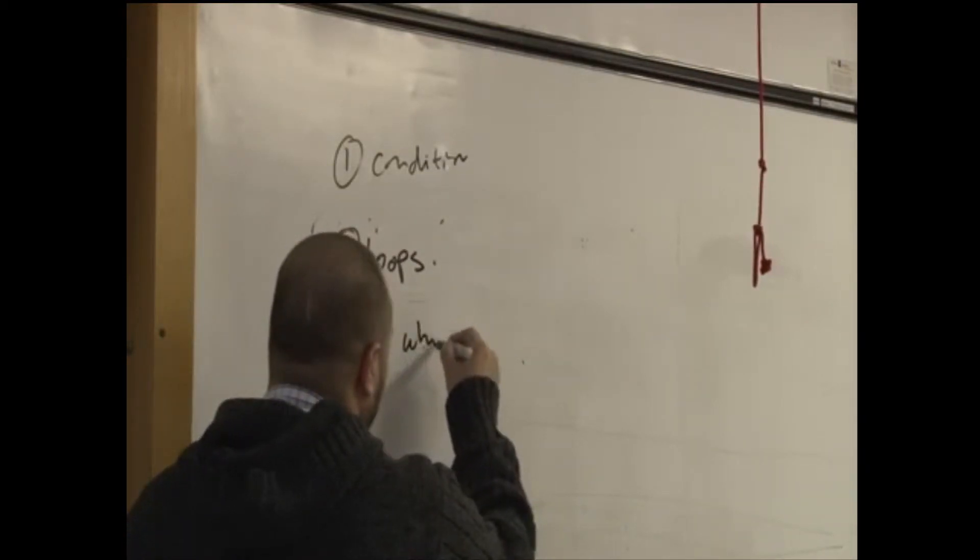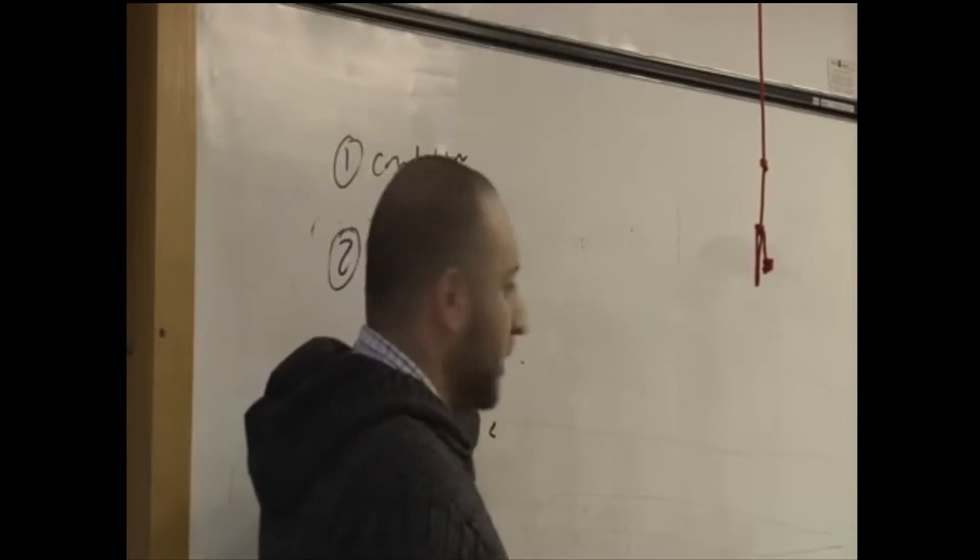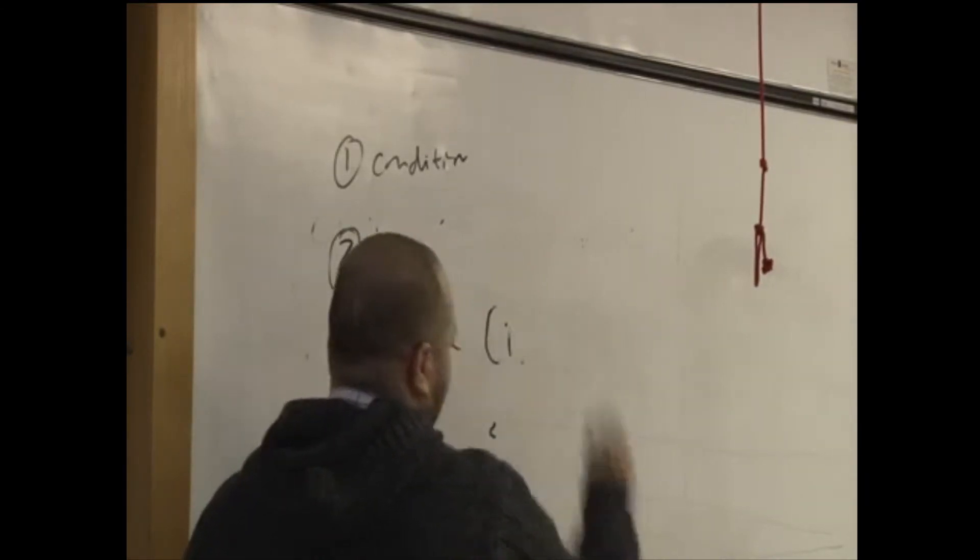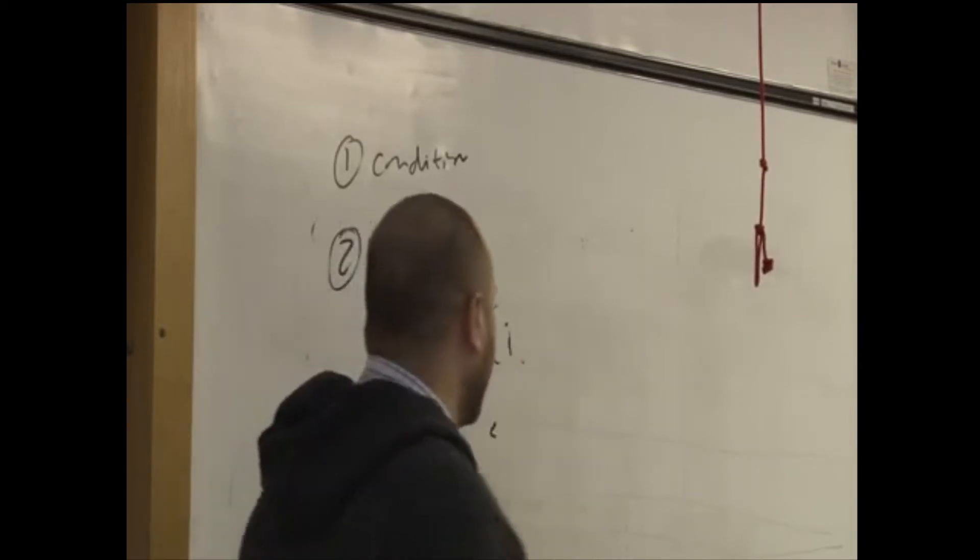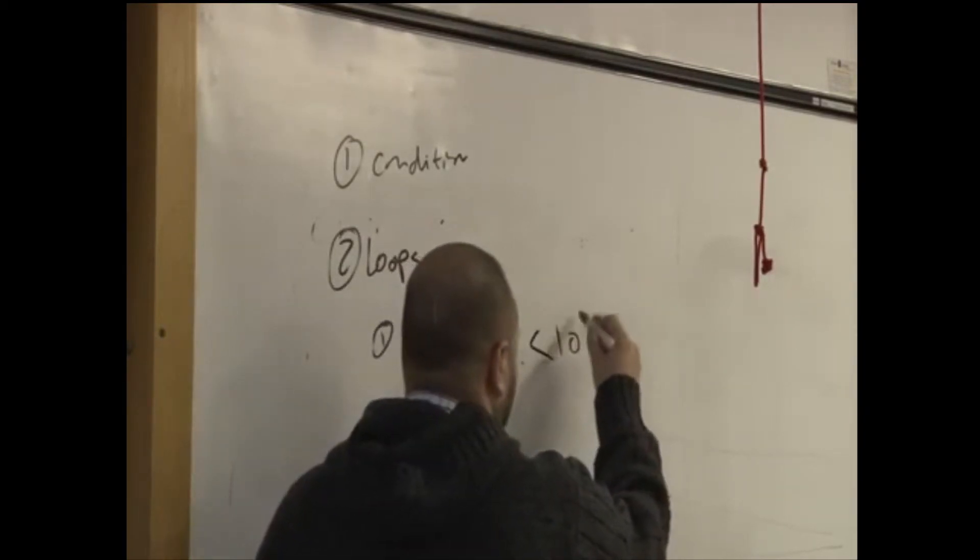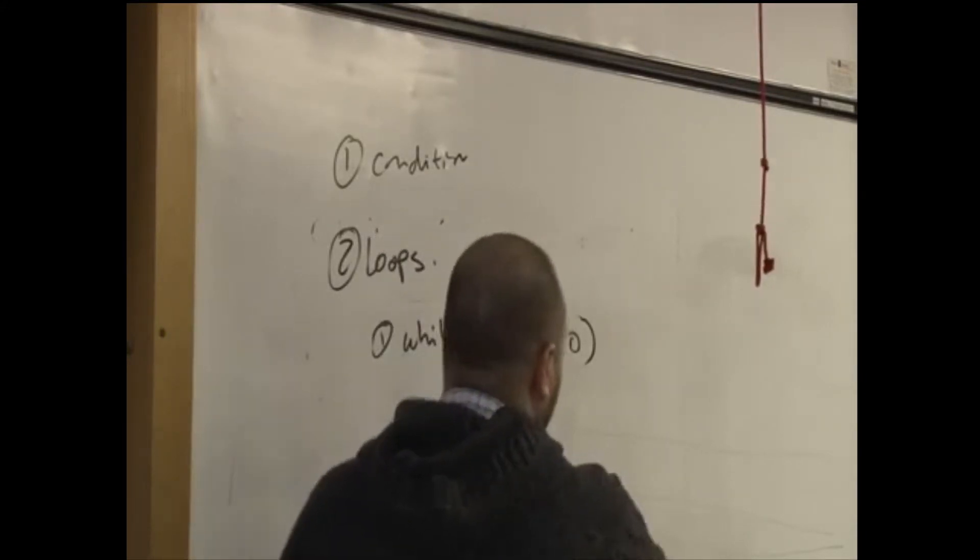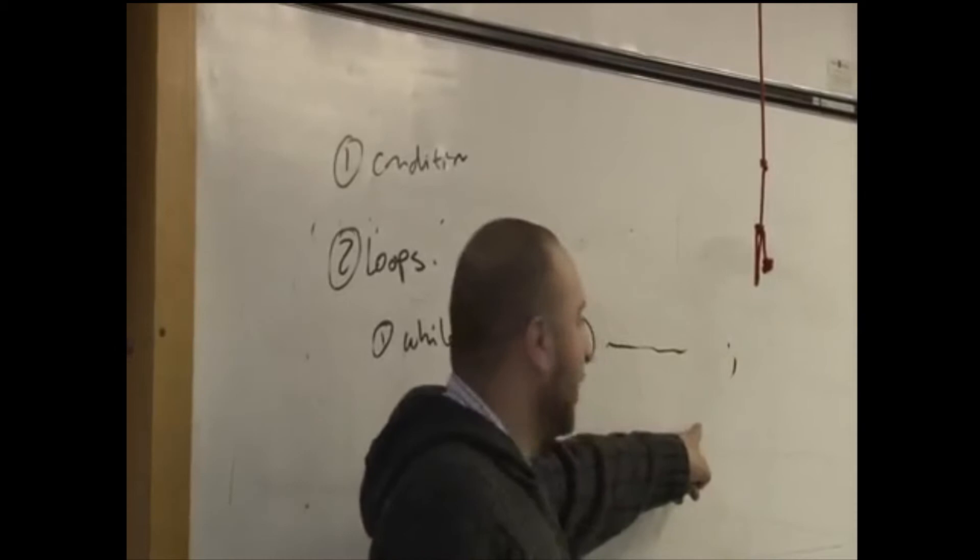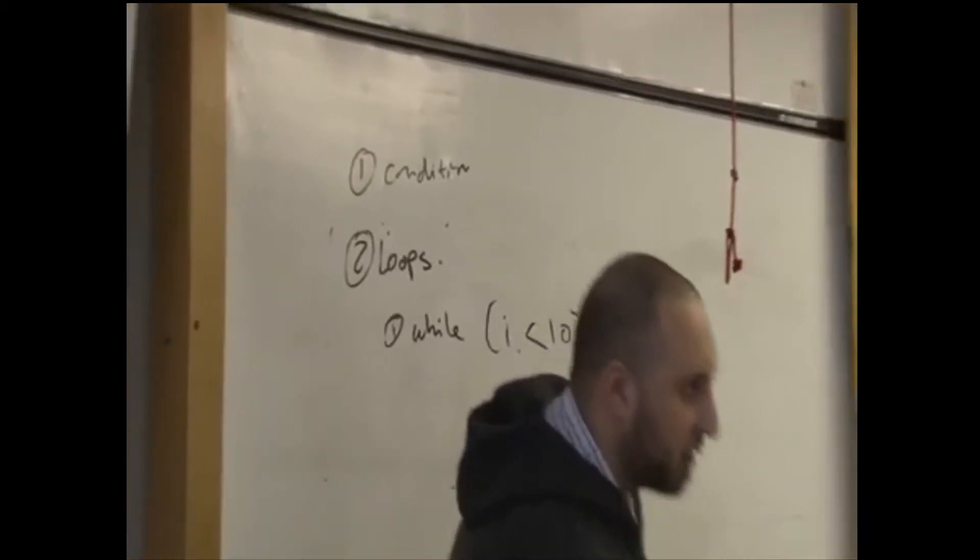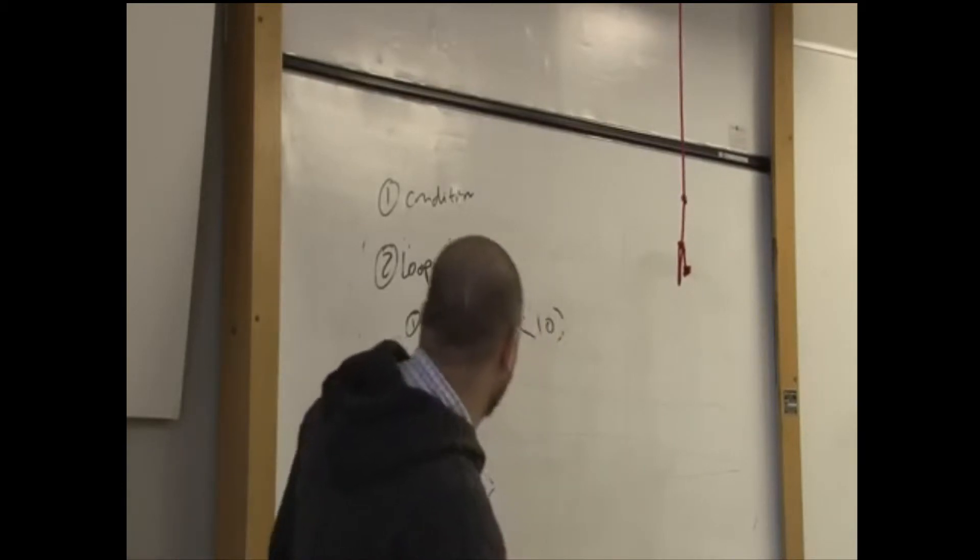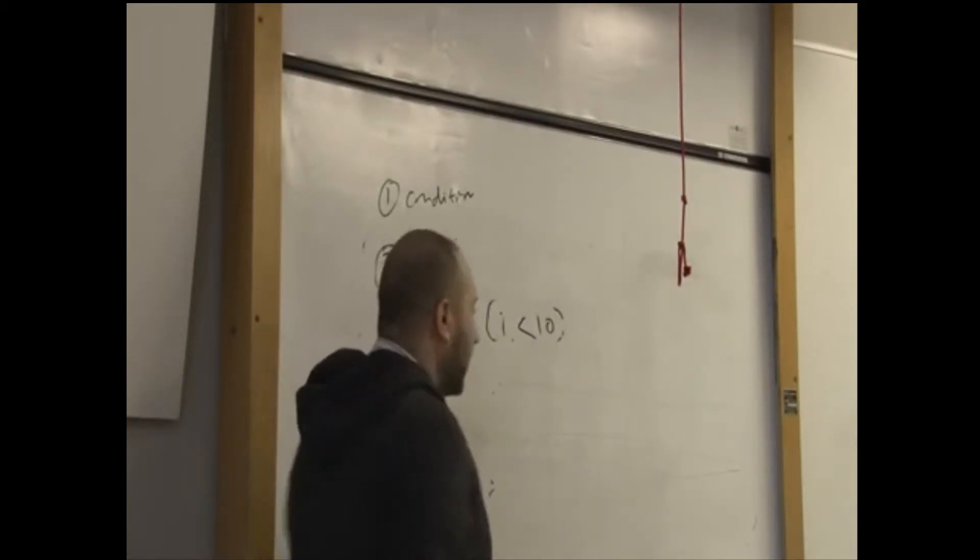First one is the while loop. While is pretty much like a condition as well, so you've got while, you know, i for example, or x could be anything, is less than 10, keep executing. Now, if it was only one line, you would just put the line here, and then you'd put the semicolon at the end. But if it's multiple lines, like I said, a paragraph, you want a block, a block of code, you would start doing these squiggly lines.